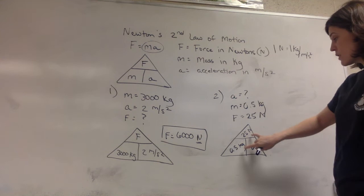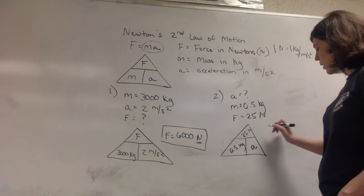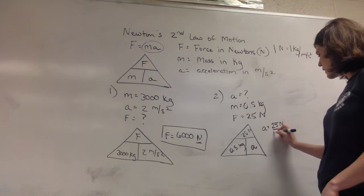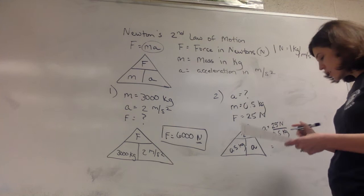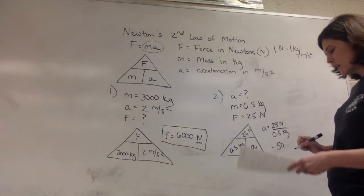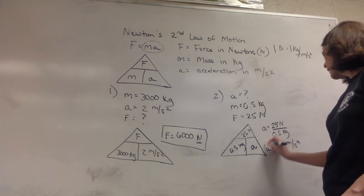To solve for acceleration, notice now the numbers are stacked one on top of the other, so remember it's always going to be top divided by bottom. So for acceleration that's going to be 25 Newtons divided by 0.5 kilograms. For acceleration you're going to get 50, so 25 divided by 0.5 is 50 meters per second squared, and that's your answer.